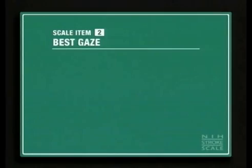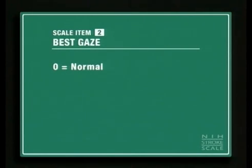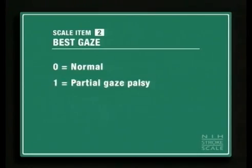Let's look at how this scale item is scored. Score a zero if the tasks are performed correctly. If a patient has ocular rotary problems, such as a strabismus, but leaves the midline and attempts to look both right and left, the patient should be considered to have a normal response.